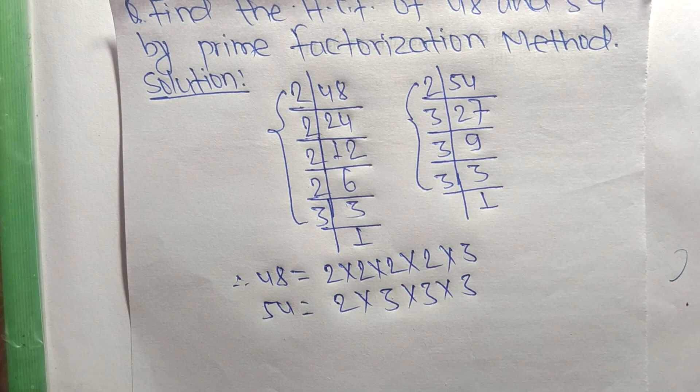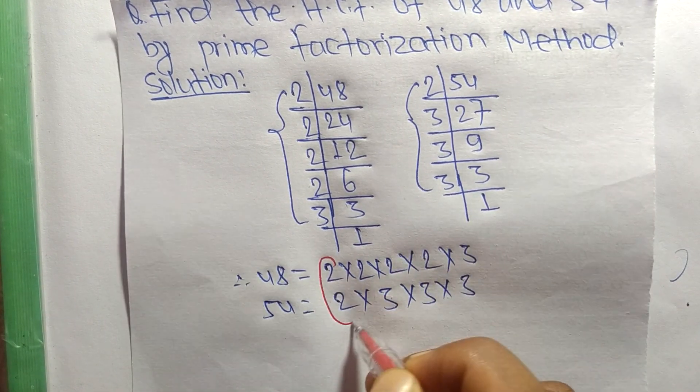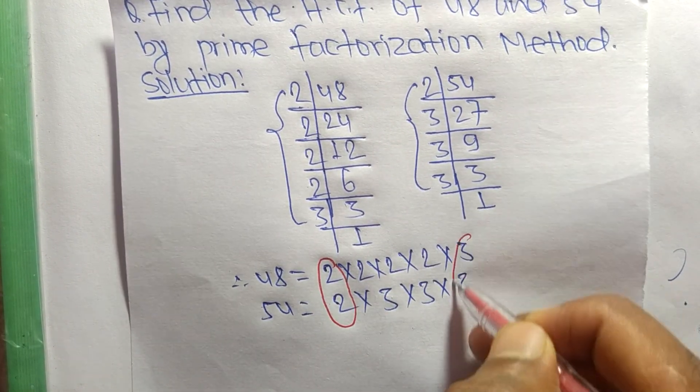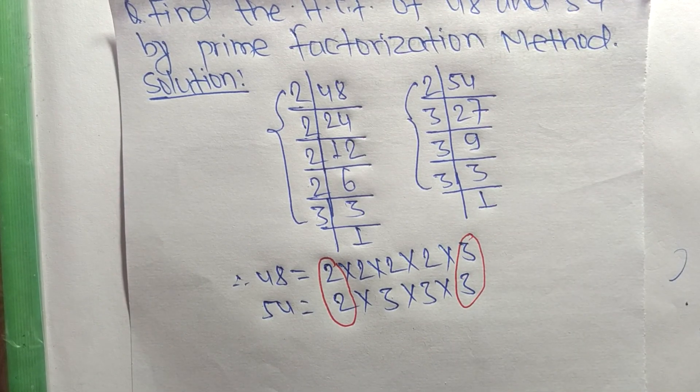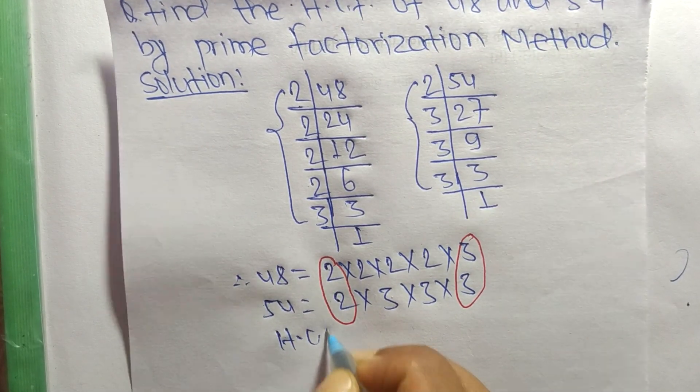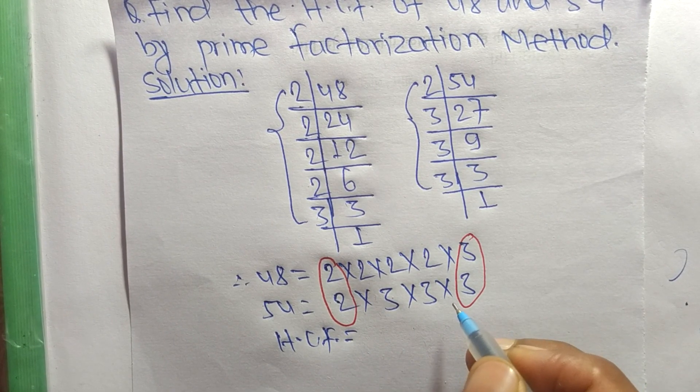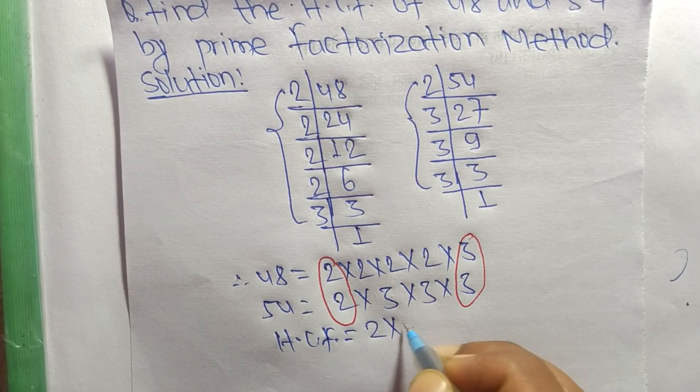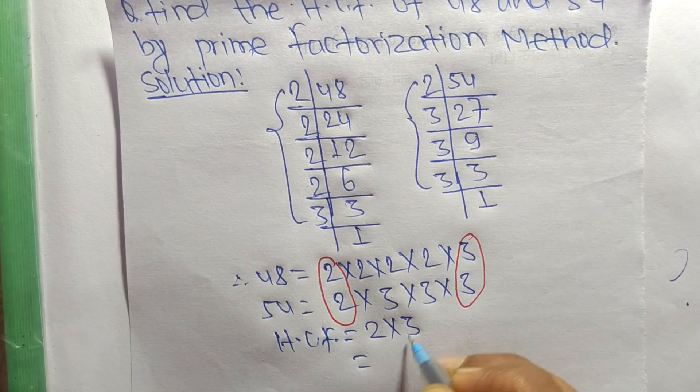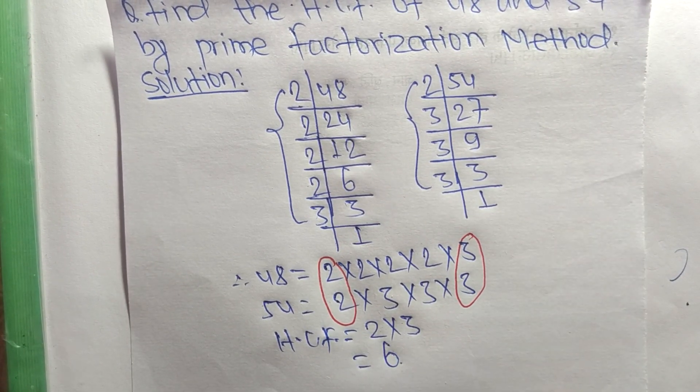The common factors are 2 and 3. So the HCF is equal to the product of common factors, which are 2 and 3. So 2 times 3 equals 6.